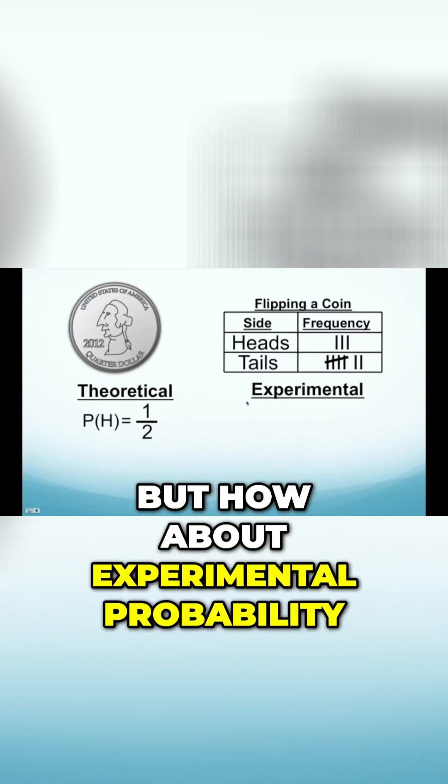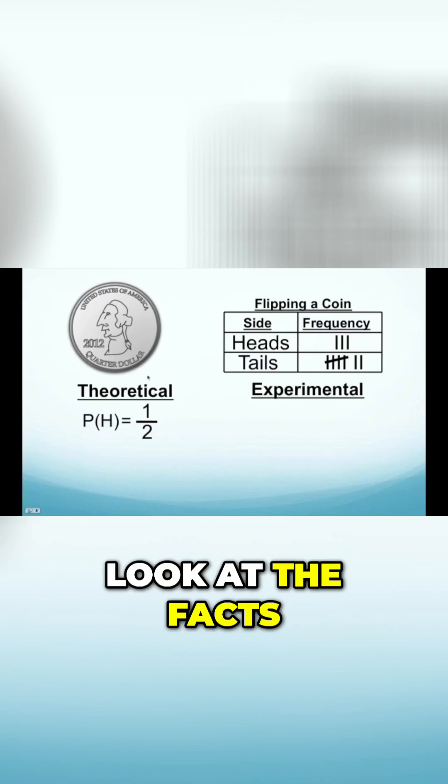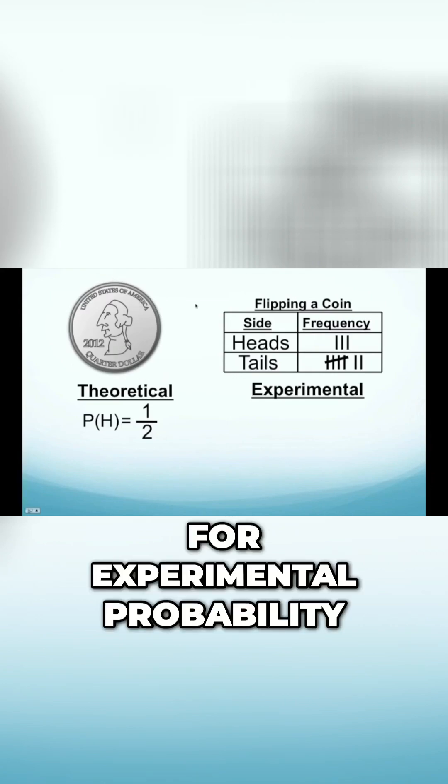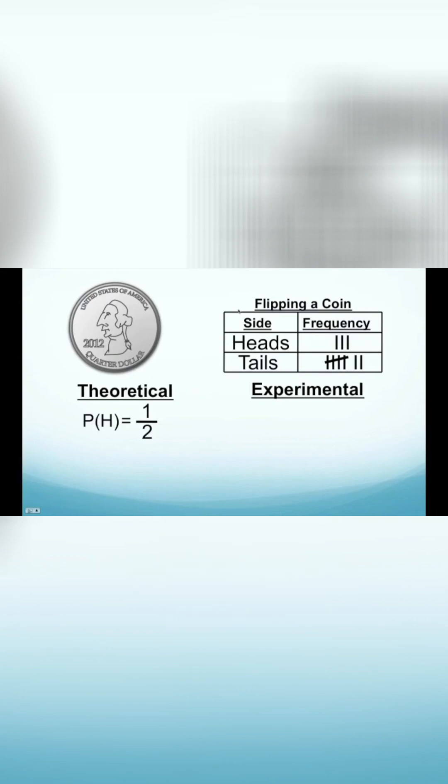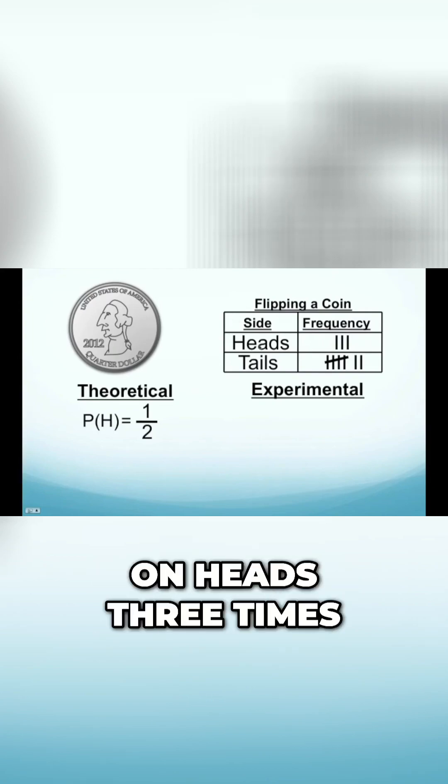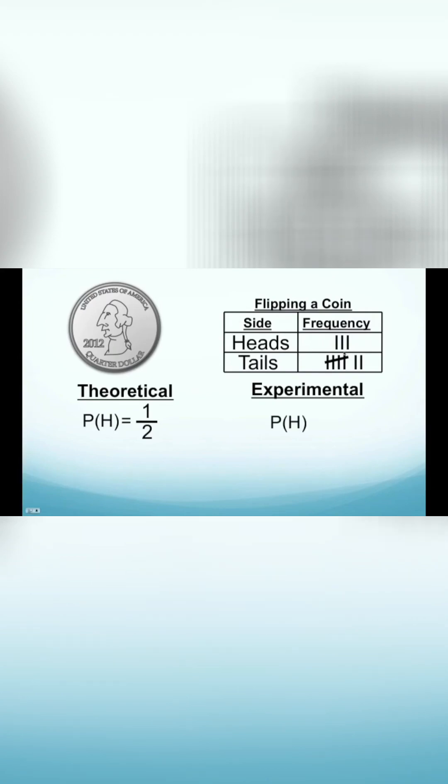But how about experimental probability? We're not going to look at the facts for experimental probability. We're going to look at the data. We're going to look at the information that we were given. We're given the fact that we landed on heads three times. Out of how many times?